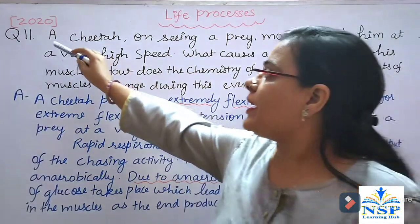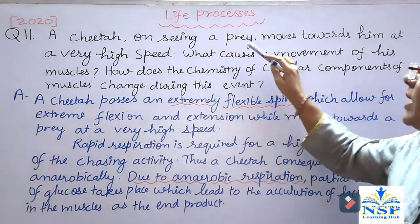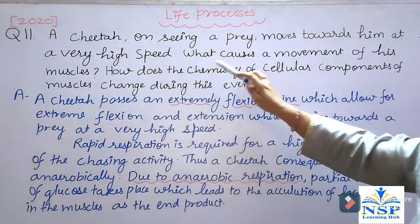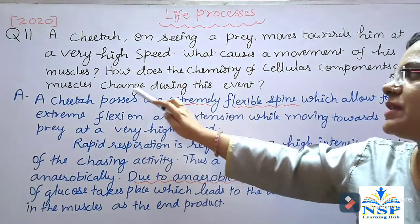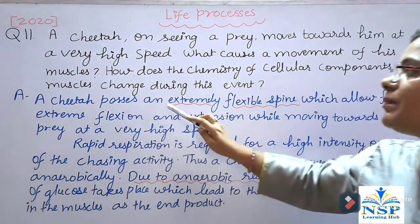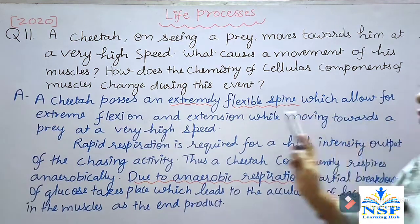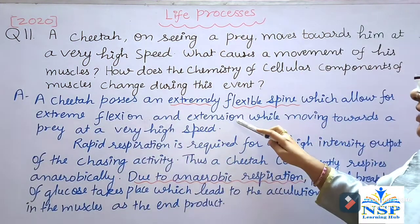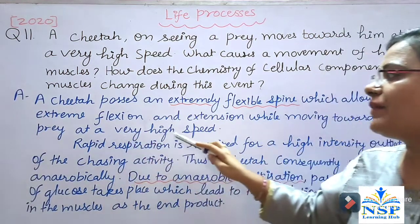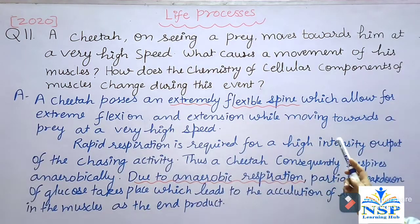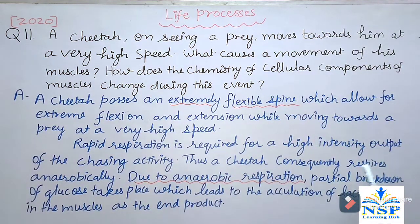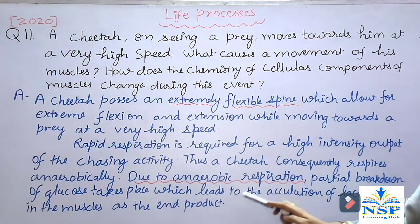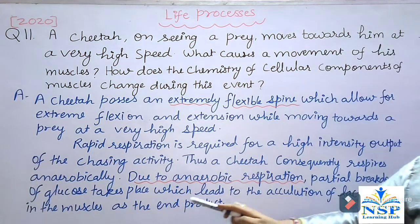Question number 11: A cheetah on seeing prey moves towards it at very high speed. What causes the movement of its muscles? How does the chemistry of cellular components of muscles change during this event? A cheetah possesses an extremely flexible spine, which allows for extreme flexion and extension while moving at high speed. Rapid respiration is required for the high-intensity output of chasing. Thus, the cheetah considerably respires anaerobically. Due to anaerobic respiration, partial breakdown of glucose takes place, leading to the accumulation of lactic acid in the muscles as the end product.